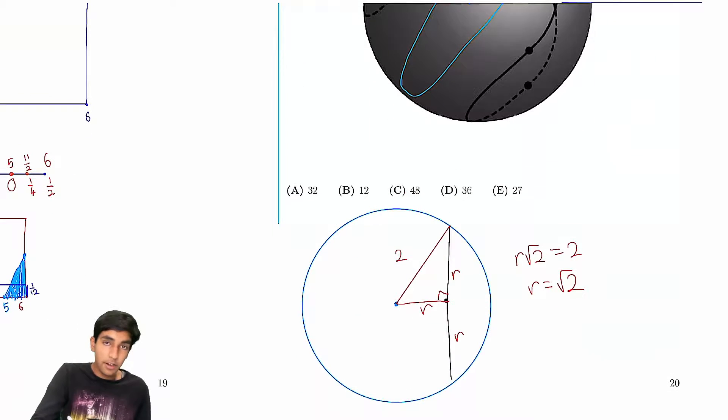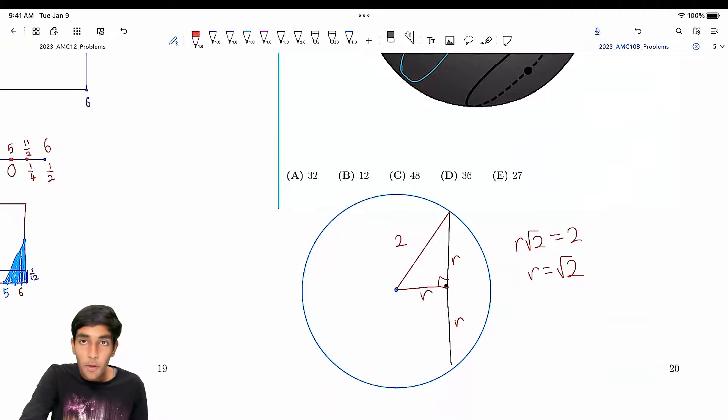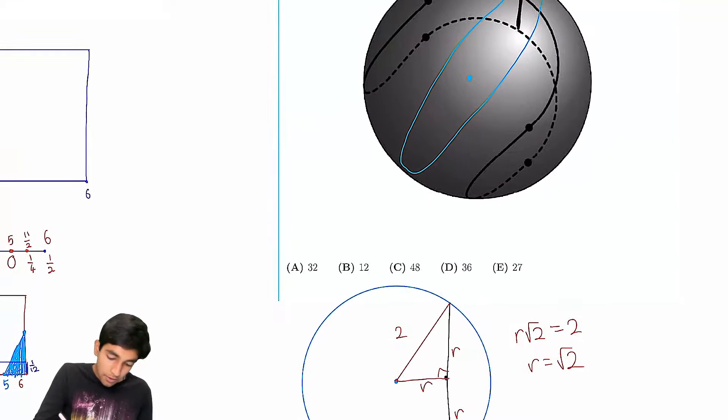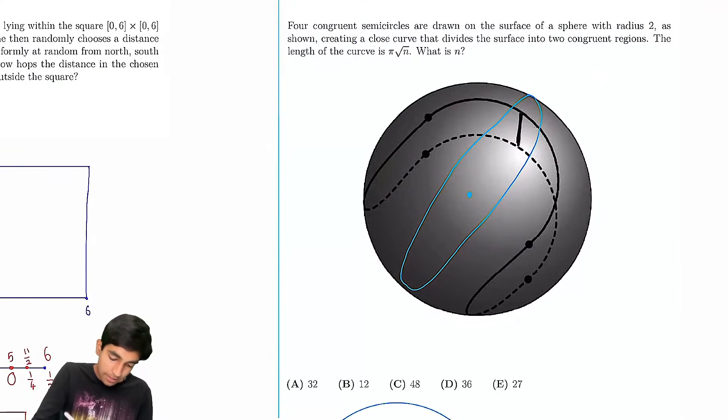Now we just have 4 of these semicircular arcs. So all we do is we say it's basically 4 times half of an arc. So 4 times 2 pi r by 2, which is just 4 pi root 2 or root 32 pi. So our answer is 32.